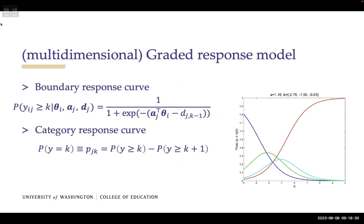The MGTT model is built upon the Graded Response Model (GRM), since we are dealing with ordinal response data. In statistics this is the cumulative logit regression model with proportional odds. The boundary response curve gives the probability of person i responding to item j with a score greater than or equal to category k, following a logistic regression model where a_j is the item discrimination and d_{jk-1} is the threshold parameter. An item with five response categories has four threshold parameters.